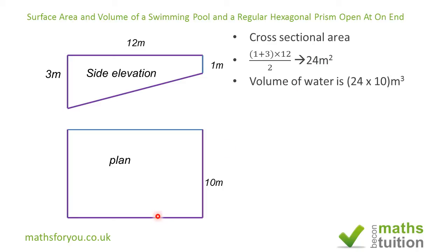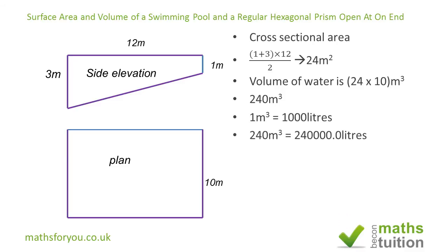To find the volume we multiply the cross-sectional area of 24 meters squared by the width of the pool, giving an answer of 240 meters cubed. To change that to liters, 1 meter cubed is equivalent to 1,000 liters, so 240 meters cubed becomes 240,000 liters. To express that in standard form, we move the decimal point 5 places to the left.